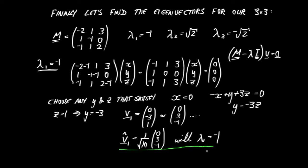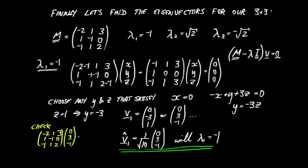We can go ahead and check this eigenvector. We write out our original matrix M — minus 2, 1, 3, 1, minus 1, 0, minus 1, 1, 2 — and multiply by our vector 0, 3, minus 1. The first element: minus 2 times 0, and then minus 3, giving 0. The second element gives minus 3. The third element gives 1. This can be written as minus 1 times the vector 0, 3, minus 1, confirming this vector works with eigenvalue minus 1.